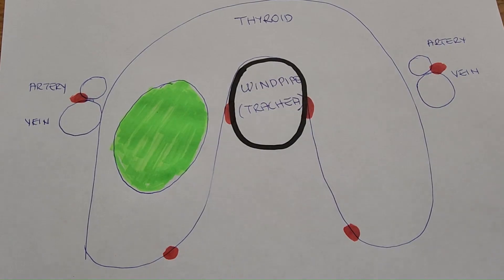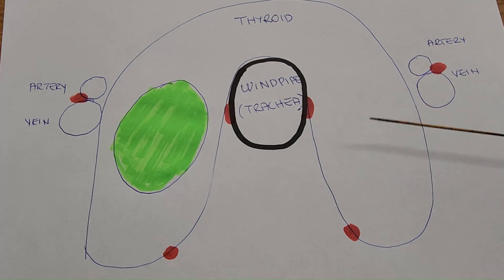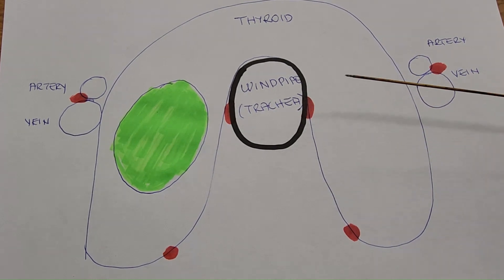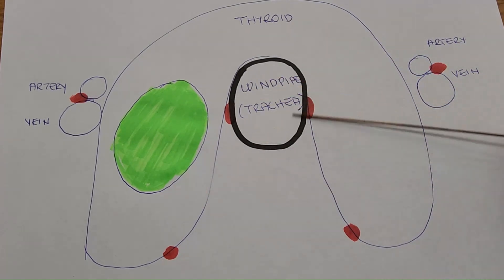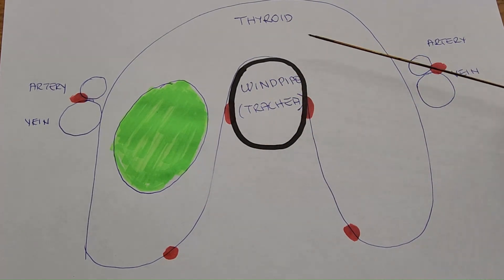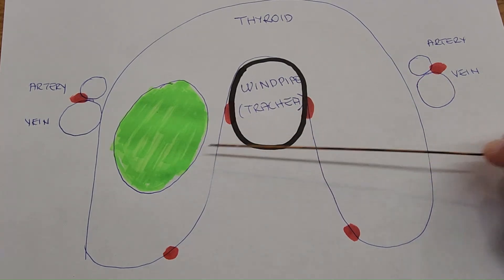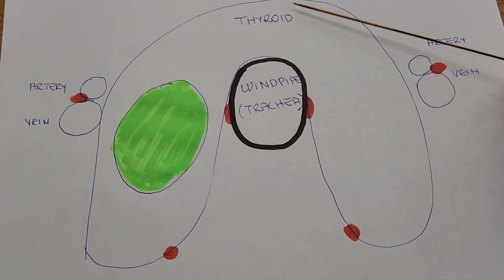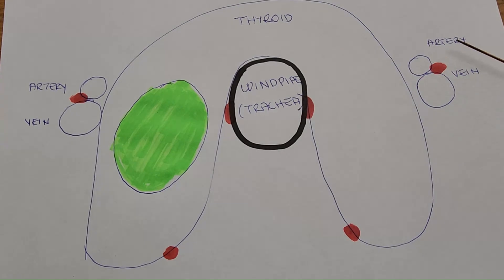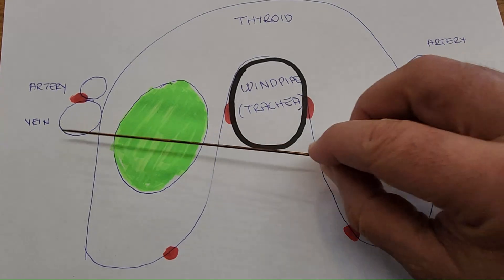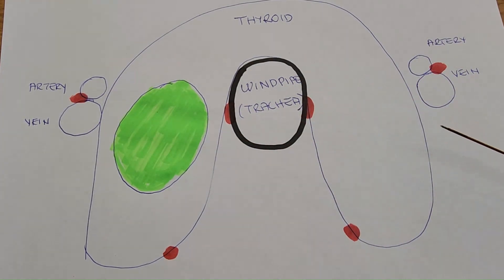This is a transverse section or drawing of the neck which shows the thyroid glands and also the windpipe or trachea. The thyroid is on both sides and in front of the windpipe. Next to the thyroid there are arteries and veins on both sides, and these are called the carotid artery and jugular vein.